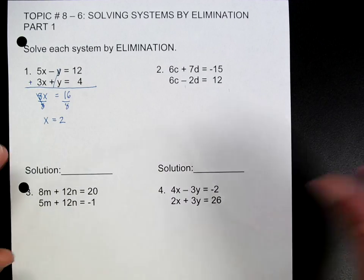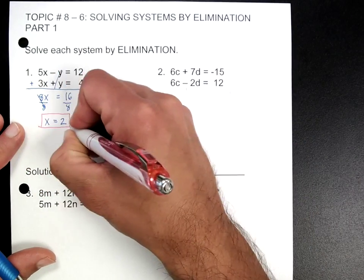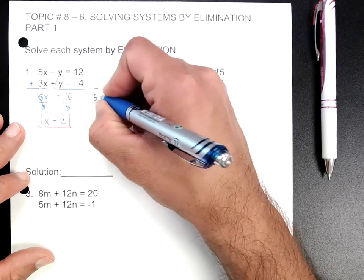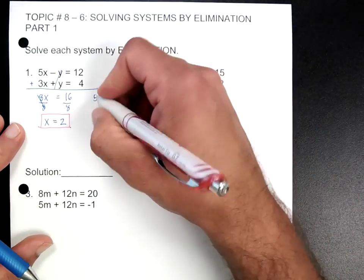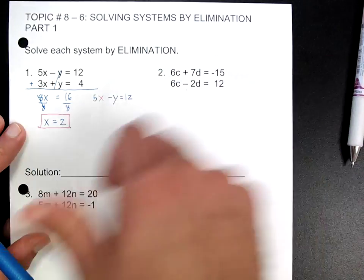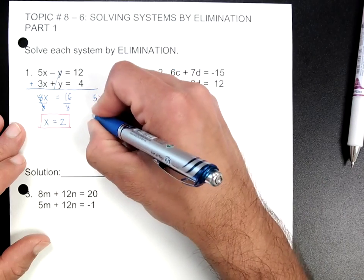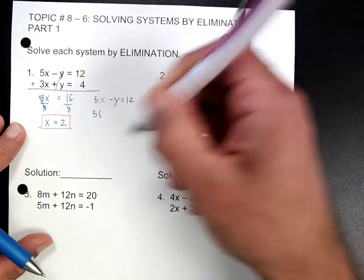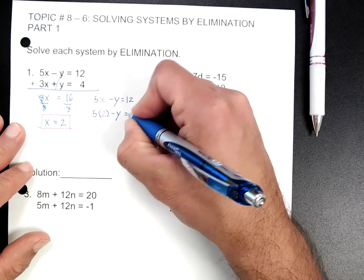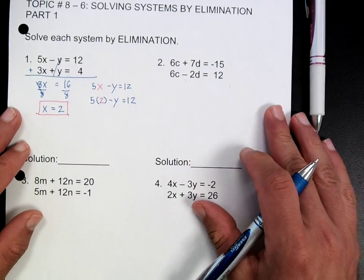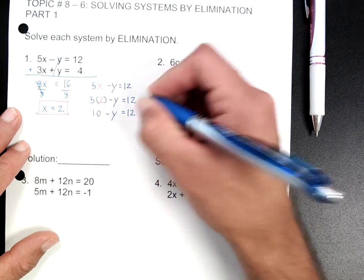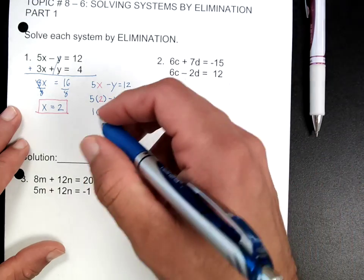This is one of the answers. I have 5x minus y equals 12. We've got 5 times 2. I don't mean to switch colors on you all the time, but I want you to notice where that's coming from. So now I have 10 minus y equals 12. I'm going to subtract 10 from each side.